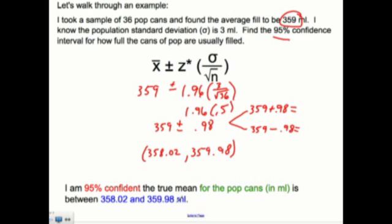And then you can see our final conclusion would be, I am 95% confident. You need to tell the reader the confidence level. The true mean for the pop cans in milliliters, you need to talk about it in the context of the problem. In the context of the problem, we're working with pop cans here, is between 358.02 and 359.98 milliliters.